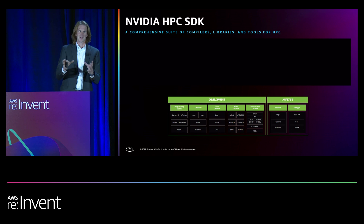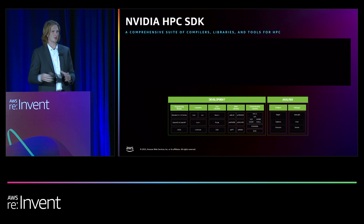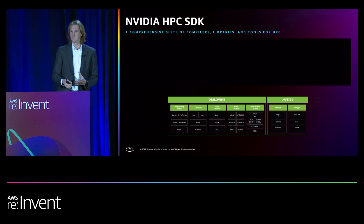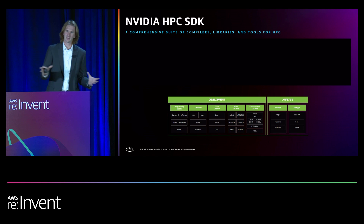A lot of what I'm going to show runs on small single-node or small node numbers, but it scales out. These compilers, libraries, tools, profilers, and debuggers are all tightly integrated with multi-node communication libraries for MPI, SHMEM, NCCL, NVSHMEM — GPU-accelerated communication libraries — all bundled in a single solution.